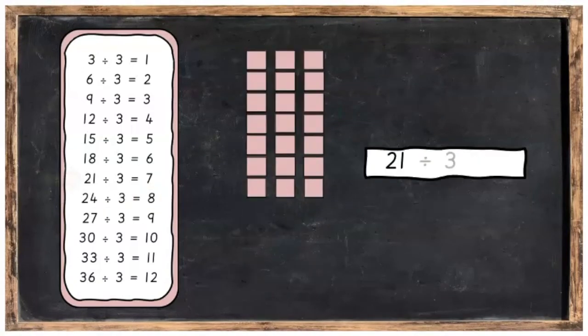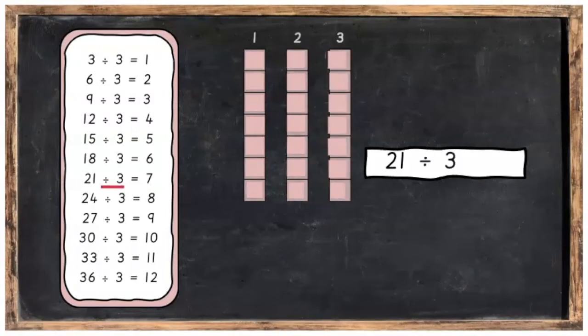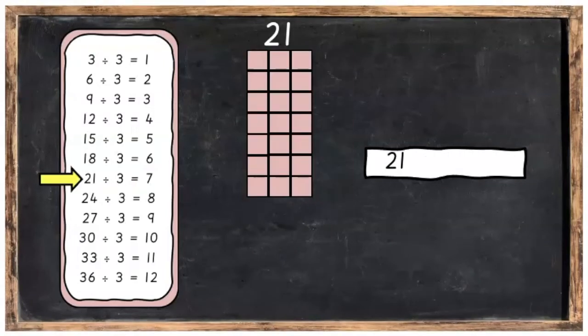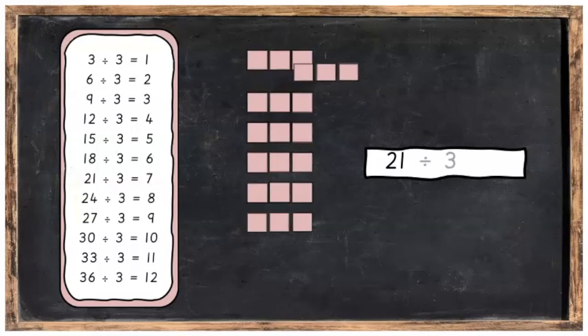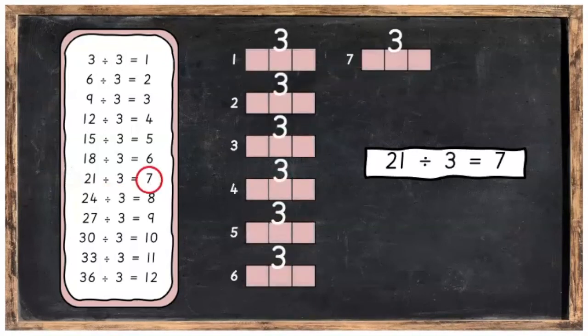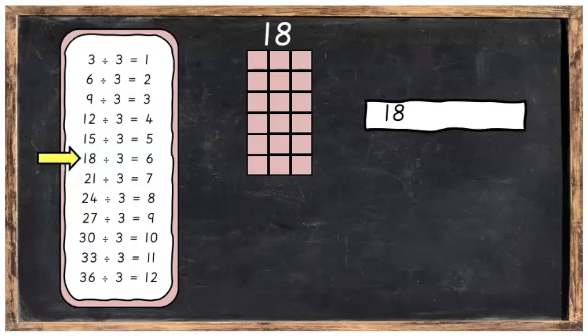21 divided into 3 equal parts, you're going to get 7 in each part. Or 21 divided into 3's, you're going to get 7 groups of 3.